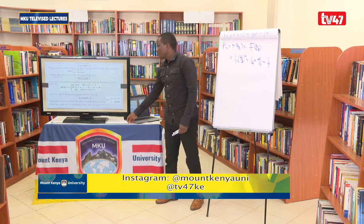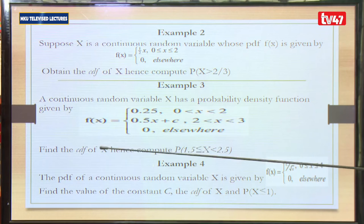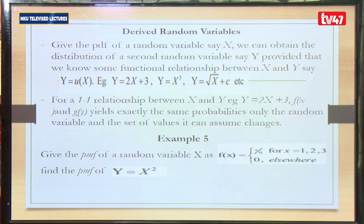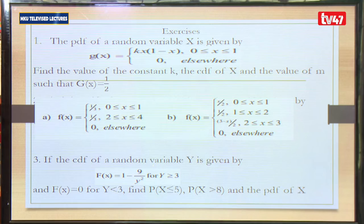We are looking for the probability that X is greater than 2/3. This implies we compute F(2/3): a quarter times (2/3)² = (1/4)(4/9) = 1/9. We can also integrate the PDF with respect to x to obtain these corresponding probabilities, with some exercises provided for practice.